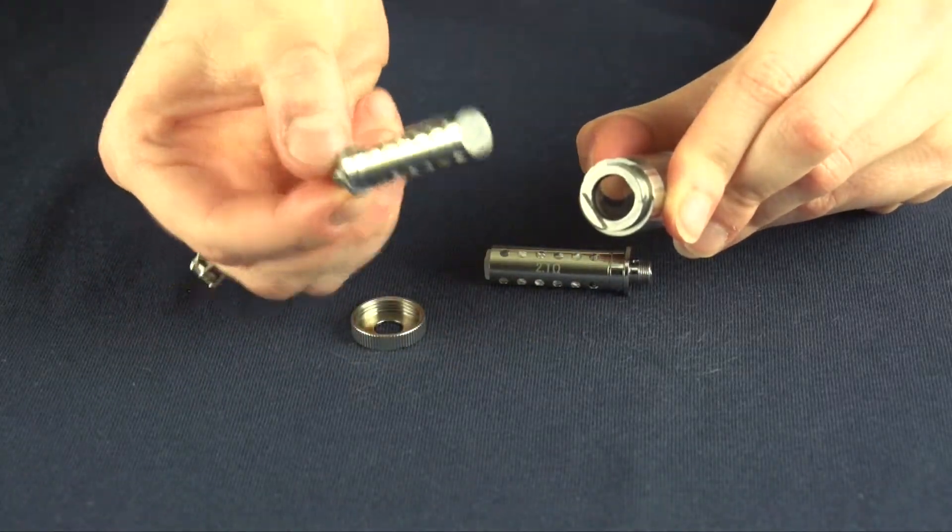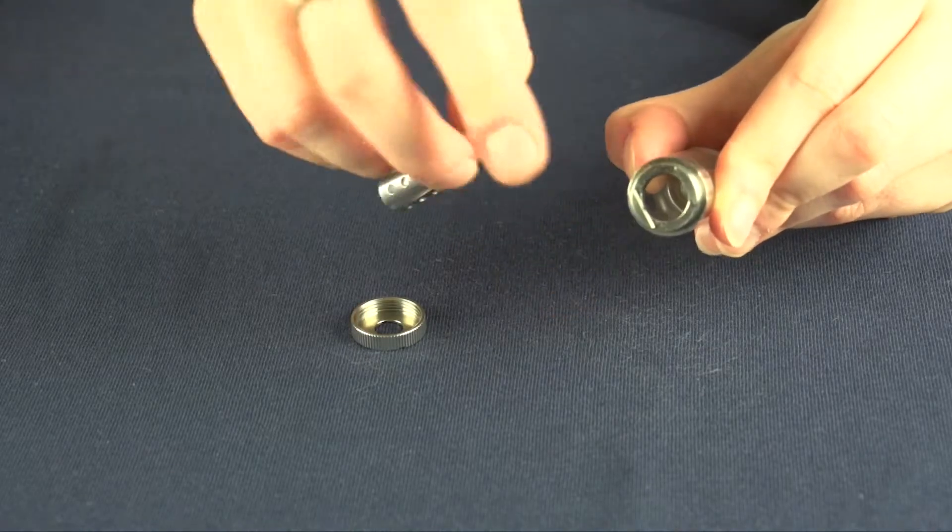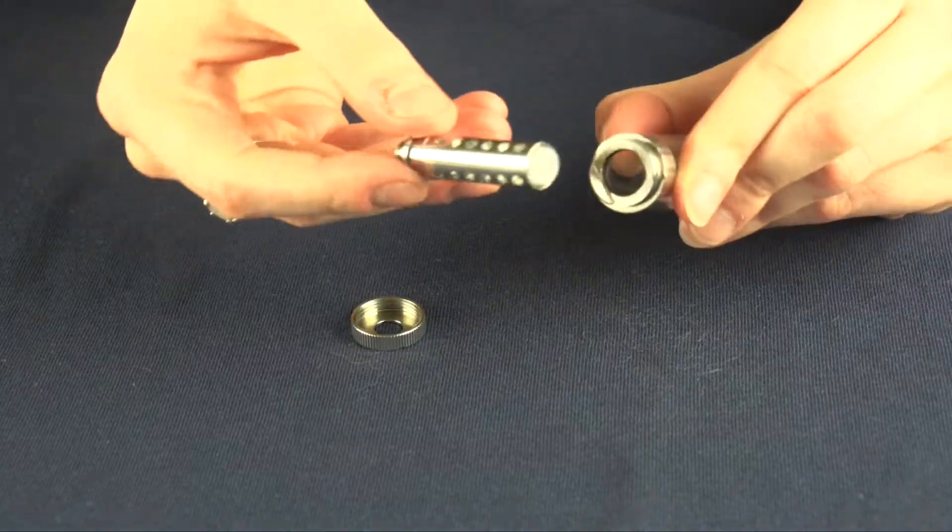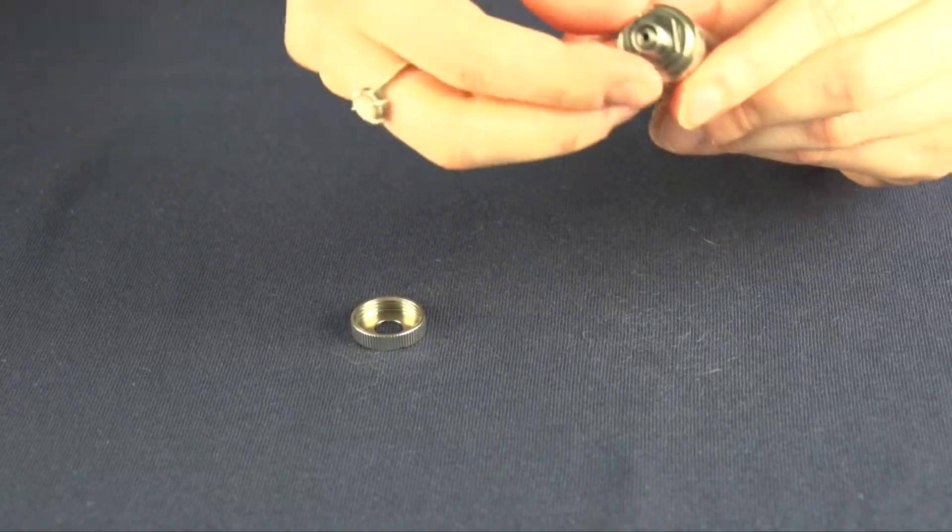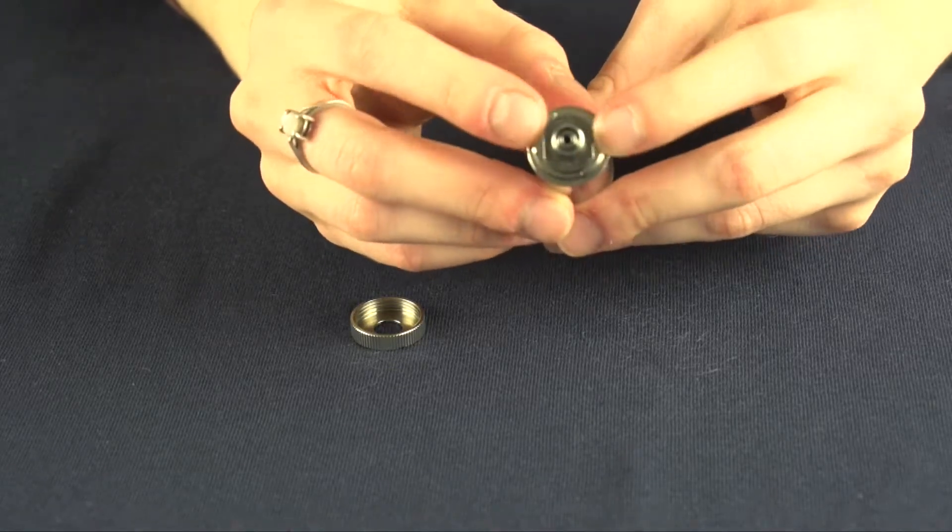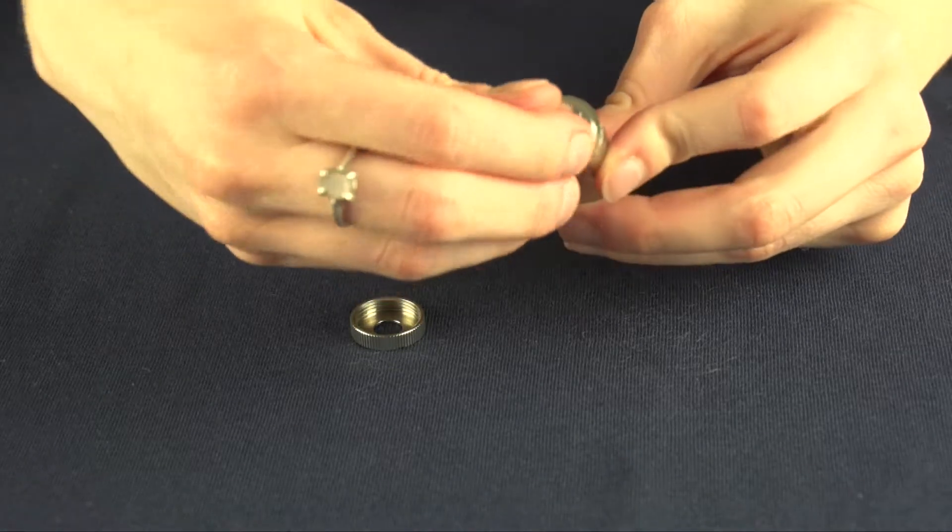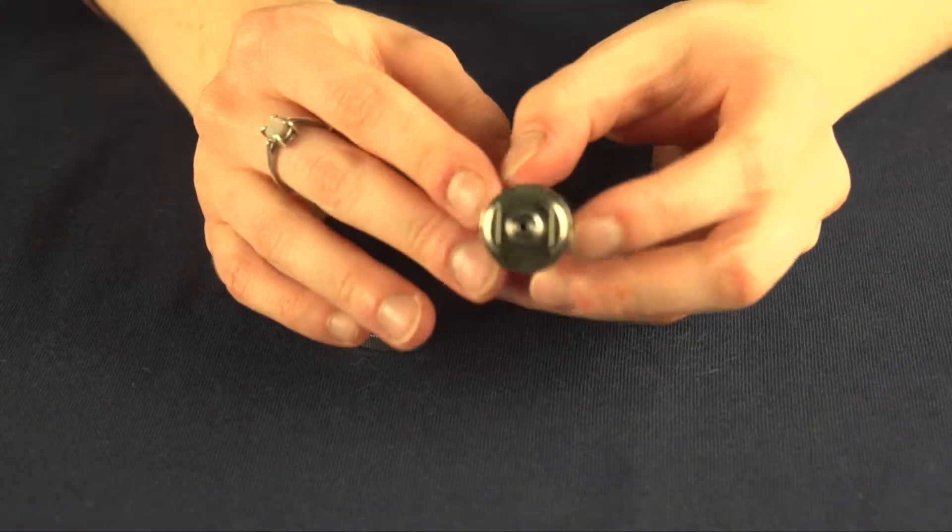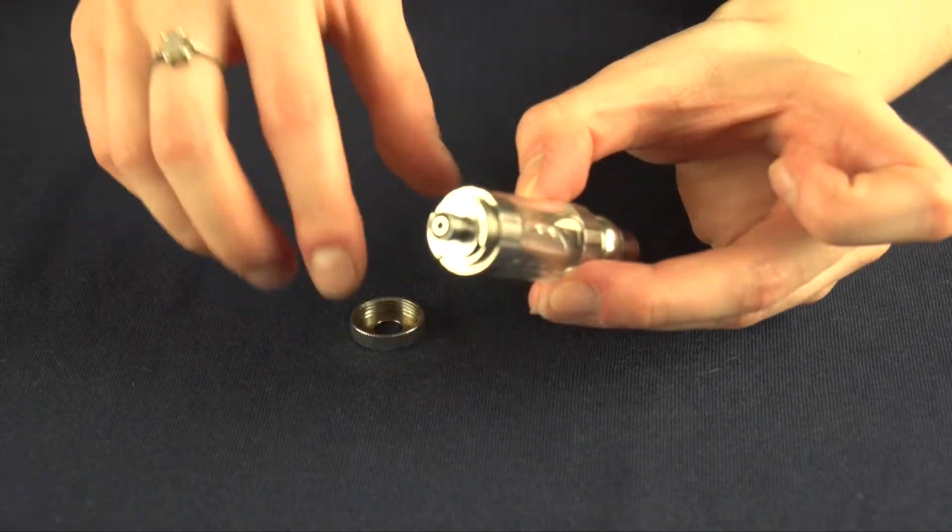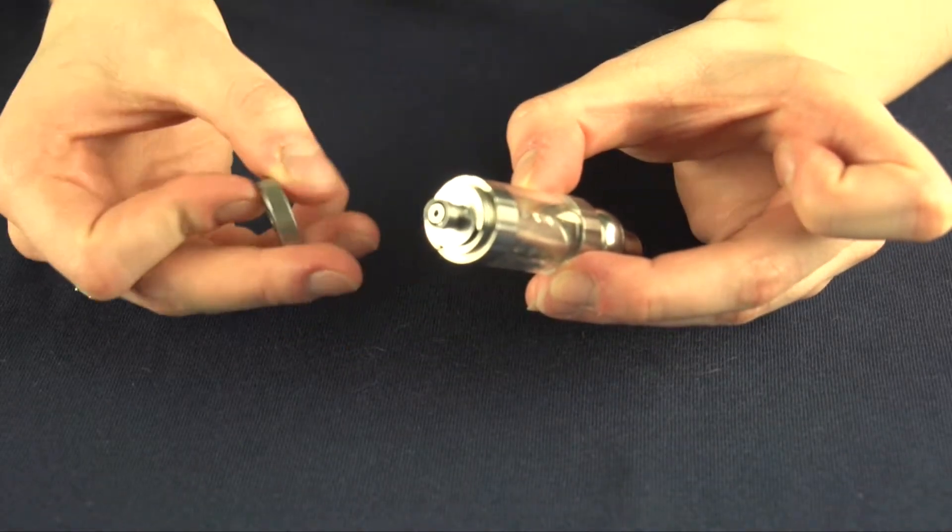You can throw the old one away and the new one will go right where the old one went. The iClear 30S has a little flange here, so make sure it lines up perfectly before screwing the base back on.